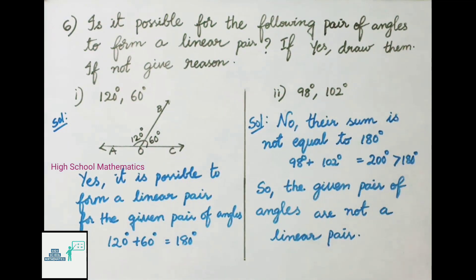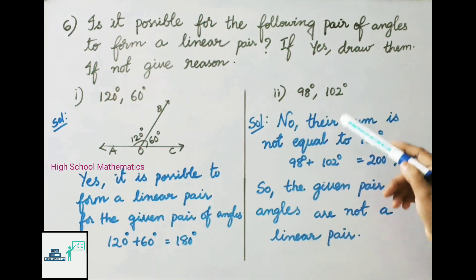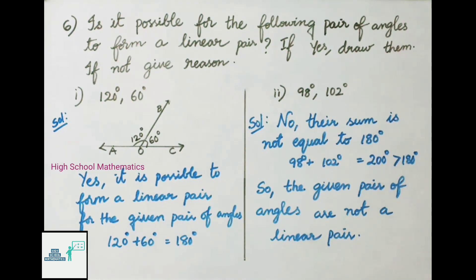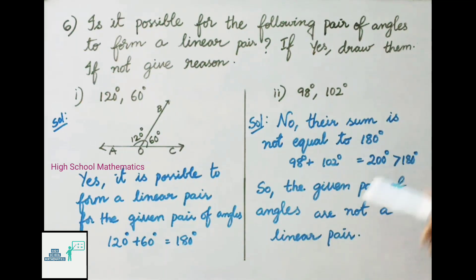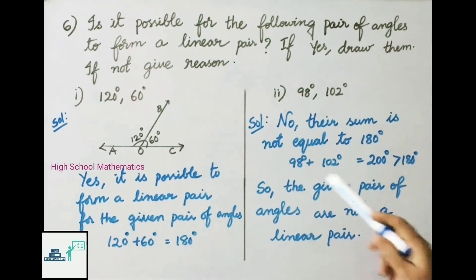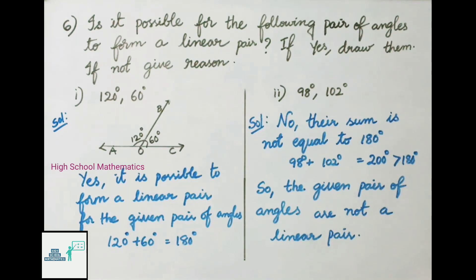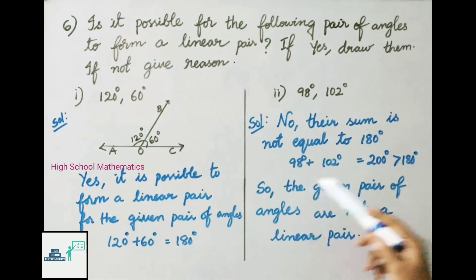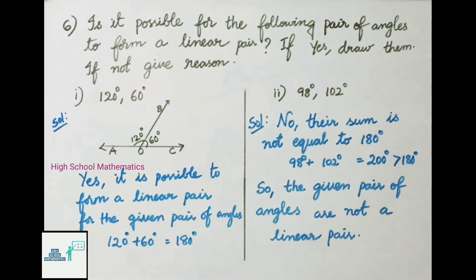Second: 98 degrees and 102 degrees. No, their sum is not equal to 180 degrees. Their sum is 98 plus 102 equals 200 degrees, which is greater than 180 degrees. So the given pair of angles are not a linear pair.